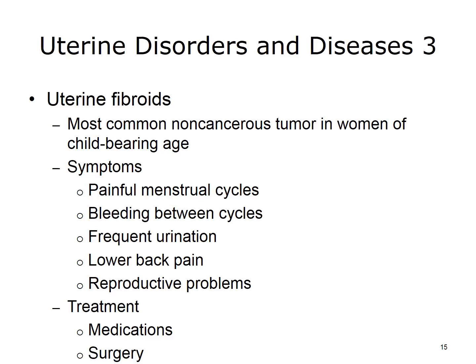Fibroids are made of muscle cells and other tissues that grow in and around the wall of the uterus. The cause is unknown. Risk factors include being African American and being overweight. Symptoms include painful menstrual cycles, bleeding between cycles, frequent urination, lower back pain, and reproductive problems. Treatment for fibroids includes medications and possibly surgery.